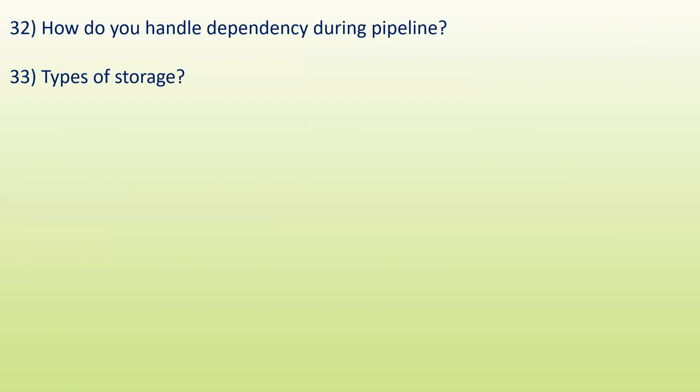Next: related to storage — blob file storage, table storage. What is a page blob? This is an important question about different storage types. Next: what is Docker? Docker is a container platform that contains different images, or you can customize your own image in a Docker container.